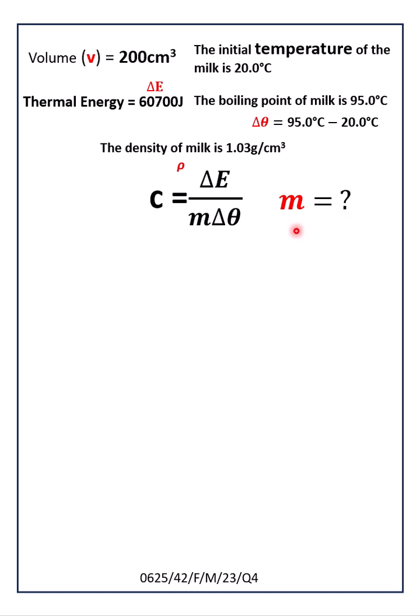First we have to find m, that is mass, in this question. We have to check with the other values given or data given. Volume is given, density is given, and we have to find mass.